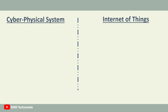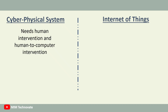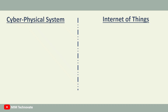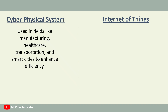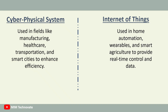Cyber-physical systems need human intervention and human-to-computer intervention, whereas Internet of Things does not need any human assistance. Cyber-physical systems are used in fields like manufacturing, healthcare, transportation, and smart cities to enhance efficiency. On the other hand, Internet of Things is used in home automation, wearables, and smart agriculture to provide real-time control and data.